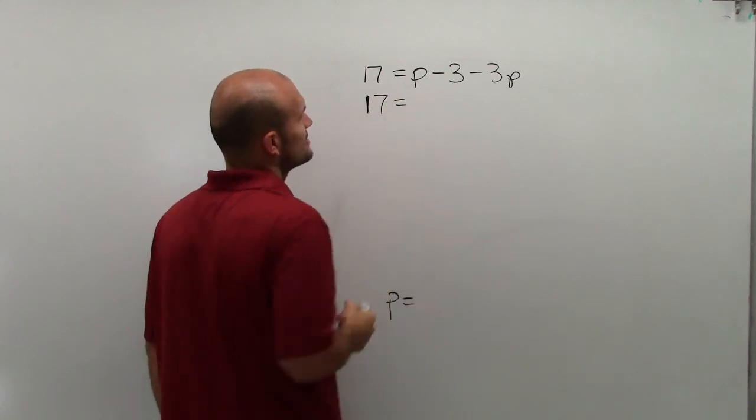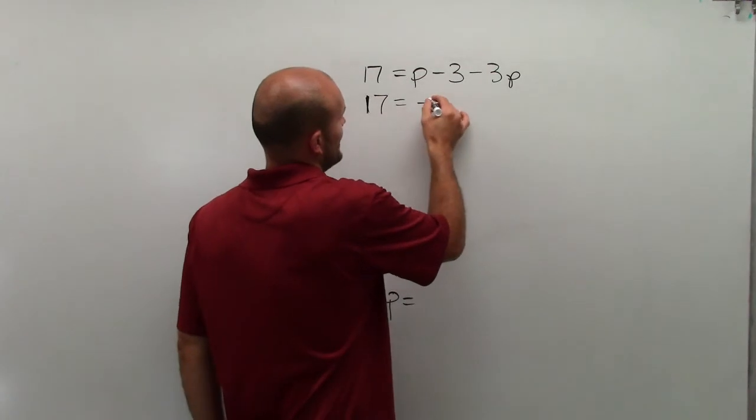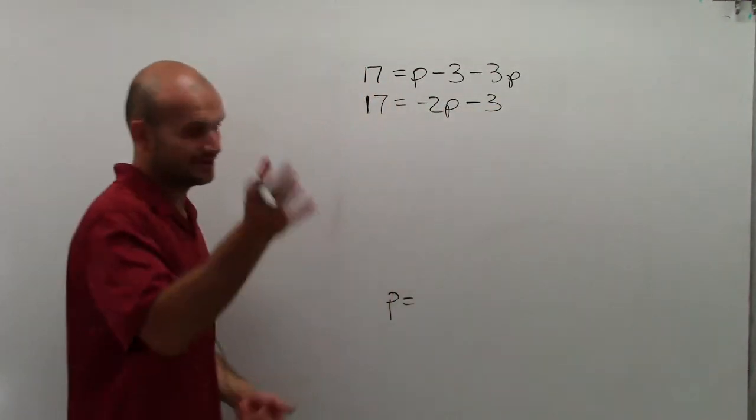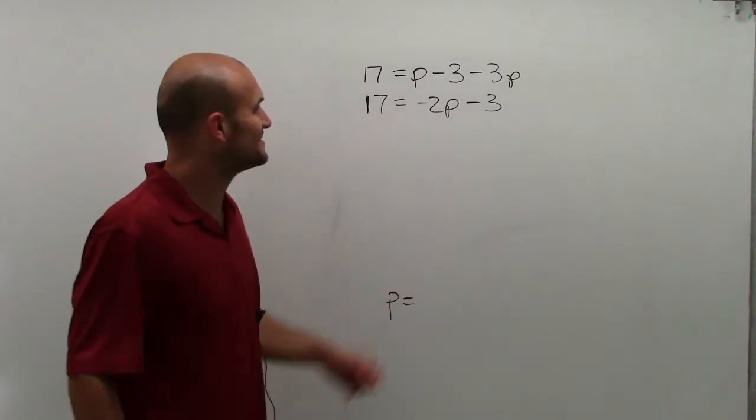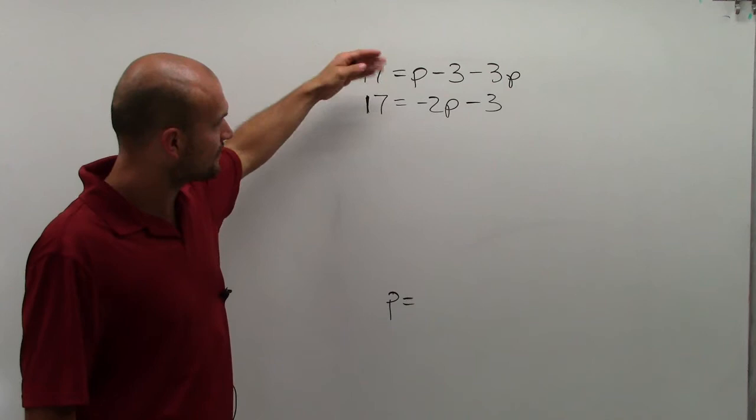And you actually don't need to rewrite this. You could just say p minus 3p, which is a negative 2p minus 3. I guess I didn't rewrite it either. But in another video, I show you why you can rewrite it. But just remember...